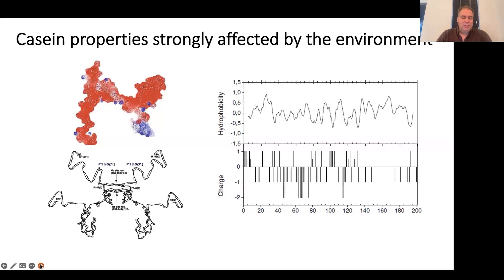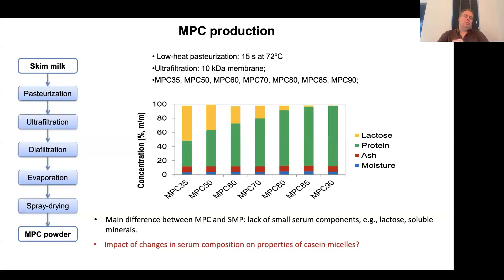If we start changing temperatures, pHs, and ionic strengths, we get things like protein charge changing a lot, and hydrophobicity and hydrophobic interactions between proteins changing significantly. That is what could be driving a lot of the behavior we see — why it's stable in some cases and unstable in others. To monitor and illustrate that, we decided to follow material through production.